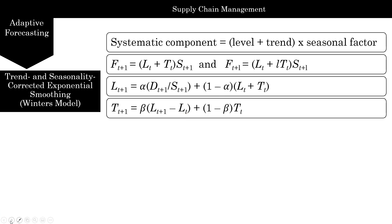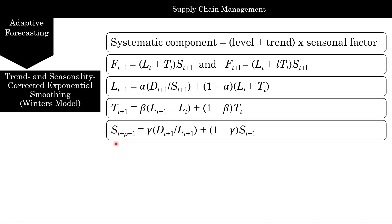The seasonal factor is calculated by taking actual demand divided by the new level. When you remove the level from demand, the only thing remaining is seasonality — that's the new seasonality. Then you take one minus gamma multiplied by the old seasonality.